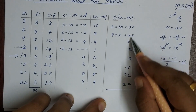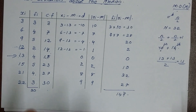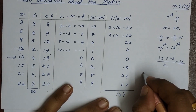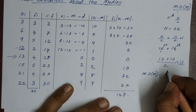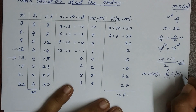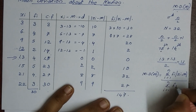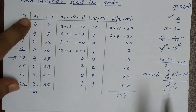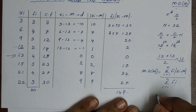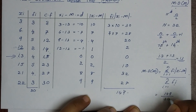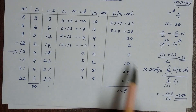This is the summation — the total of all fi × |xi − M|. Adding these up gives a total of 149. So the mean deviation about the median is: summation of fi × |xi − M| divided by summation of fi, which equals 149 divided by 30, that is equal to 4.97. So 4.97 is the mean deviation about the median.